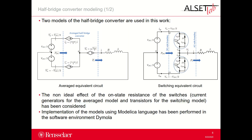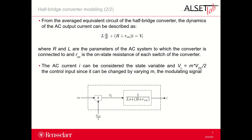The modeling approach of the half-bridge converter is illustrated in this slide. Two models of the converter are used in this work: the averaged model and the switching model. The non-ideal effect of the on-state resistance of the switches — current generators for the average model and transistors for the switching model — has been considered. The implementation of the models using Modelica language has been performed in the software environment Dymola. From the average equivalent circuit of the half-bridge converter, the dynamics of the AC output current can be described by this equation, where R and L are the parameters of the AC system to which the converter is connected, and R_on is the on-state resistance of each switch of the converter.